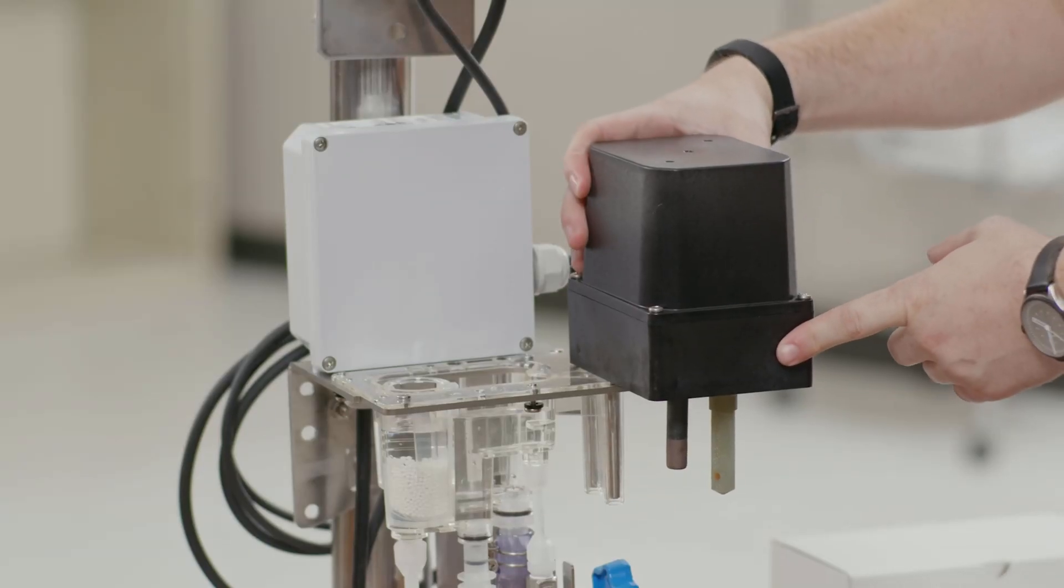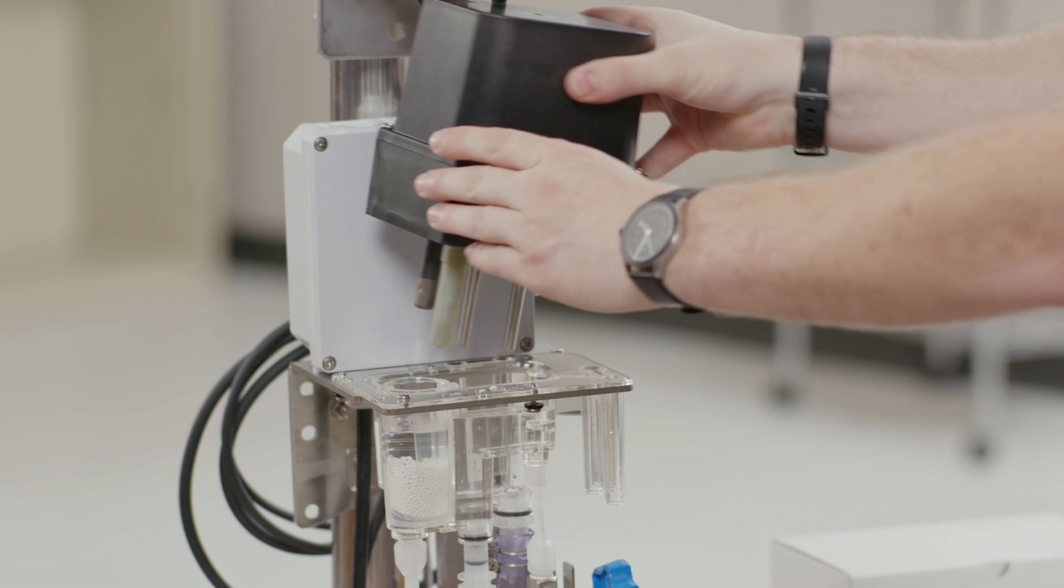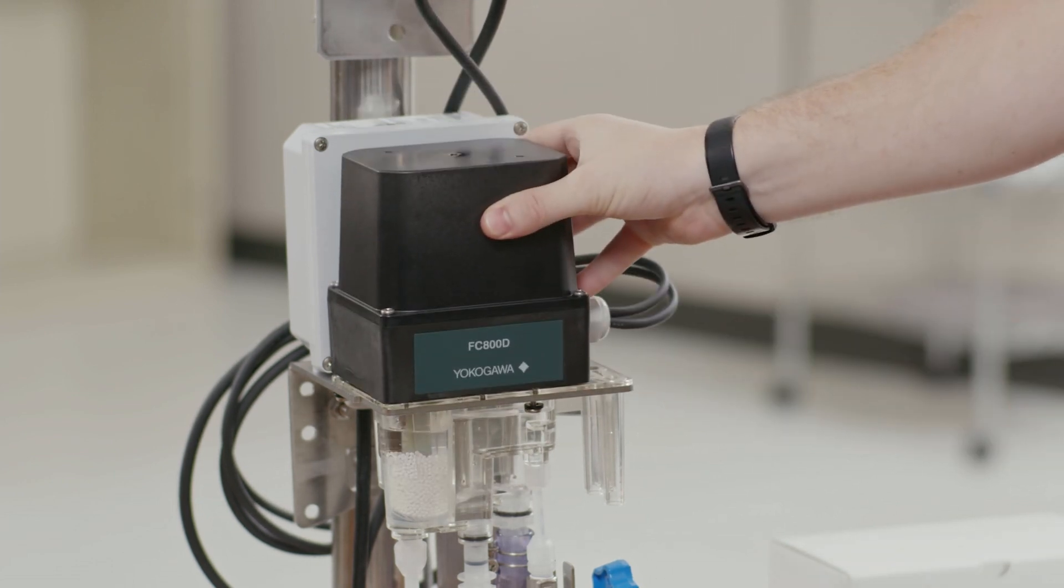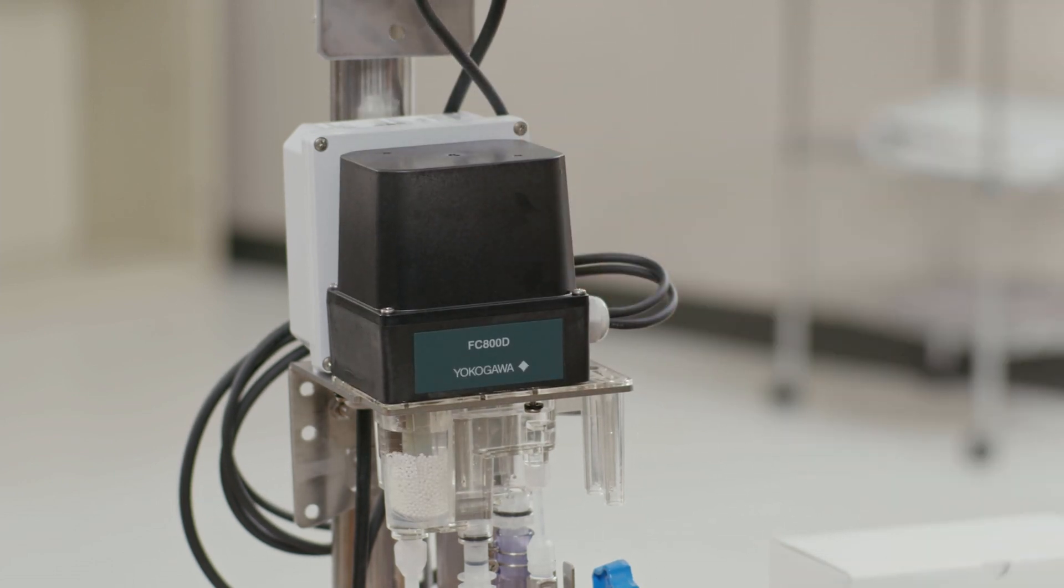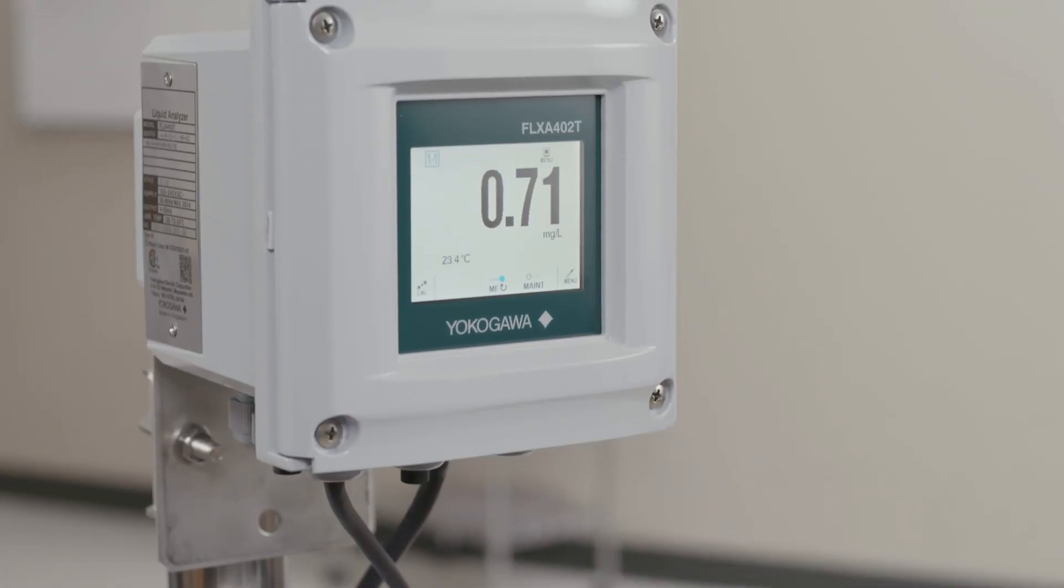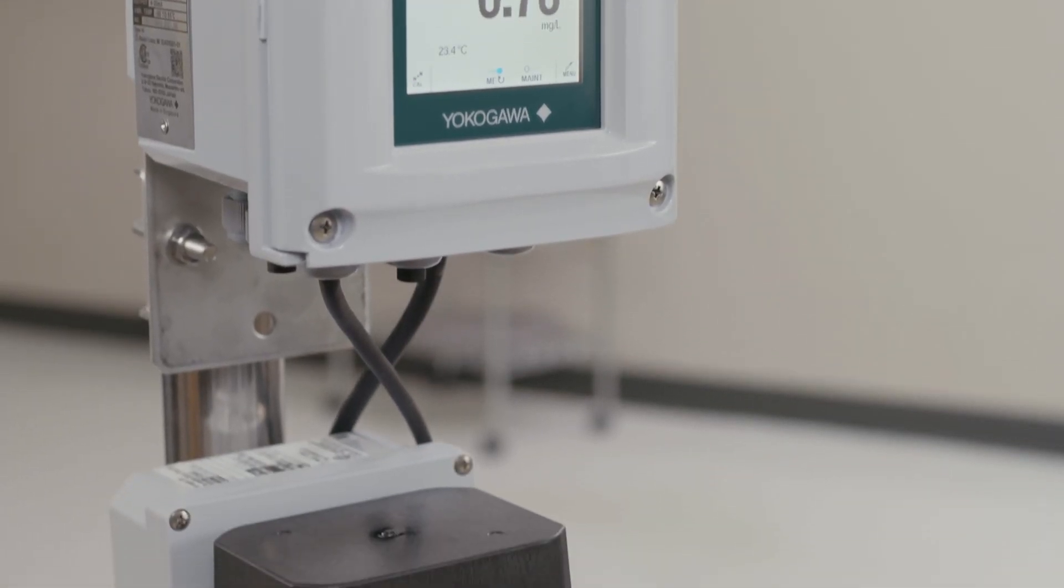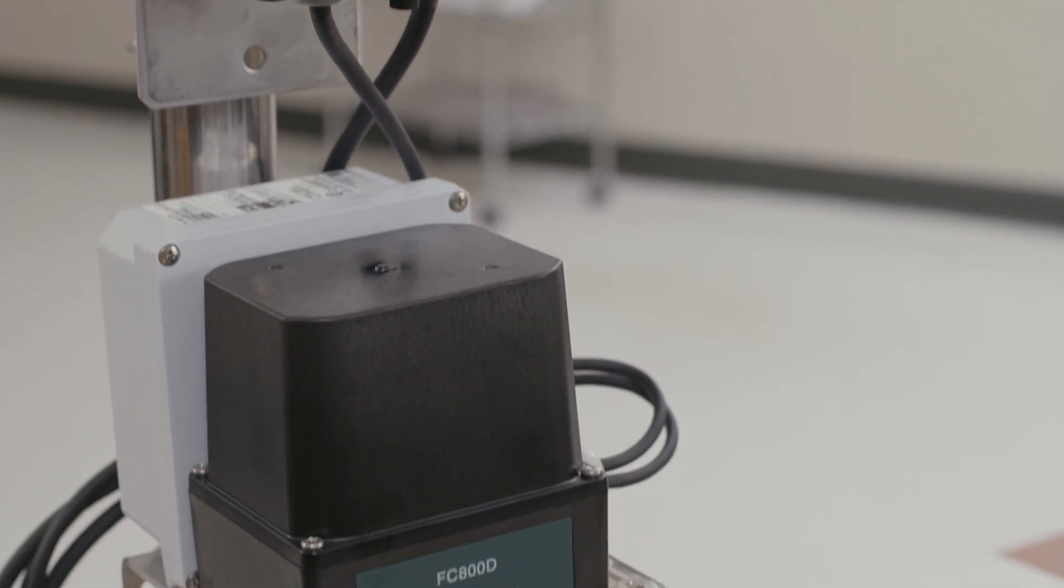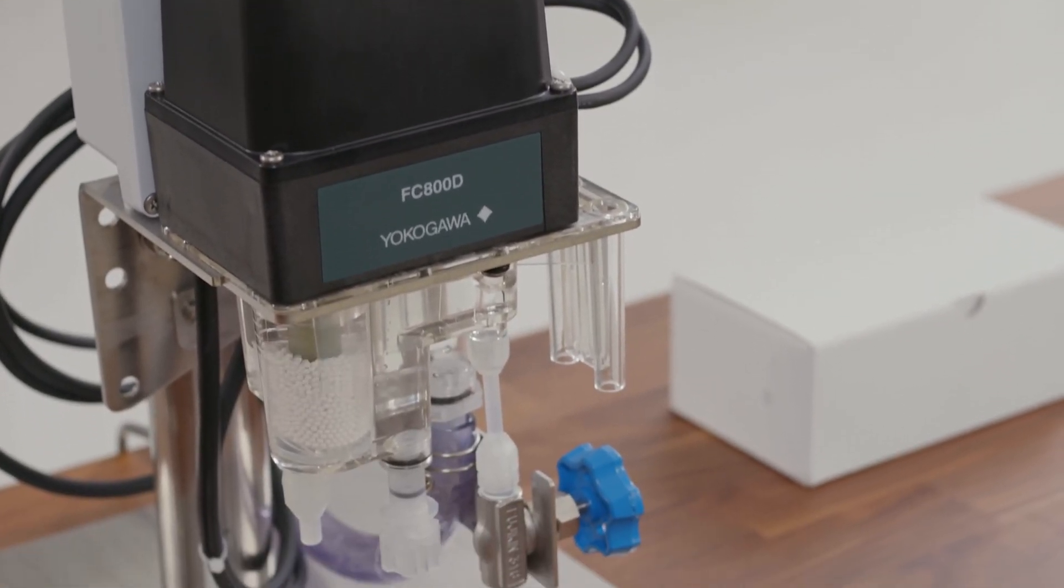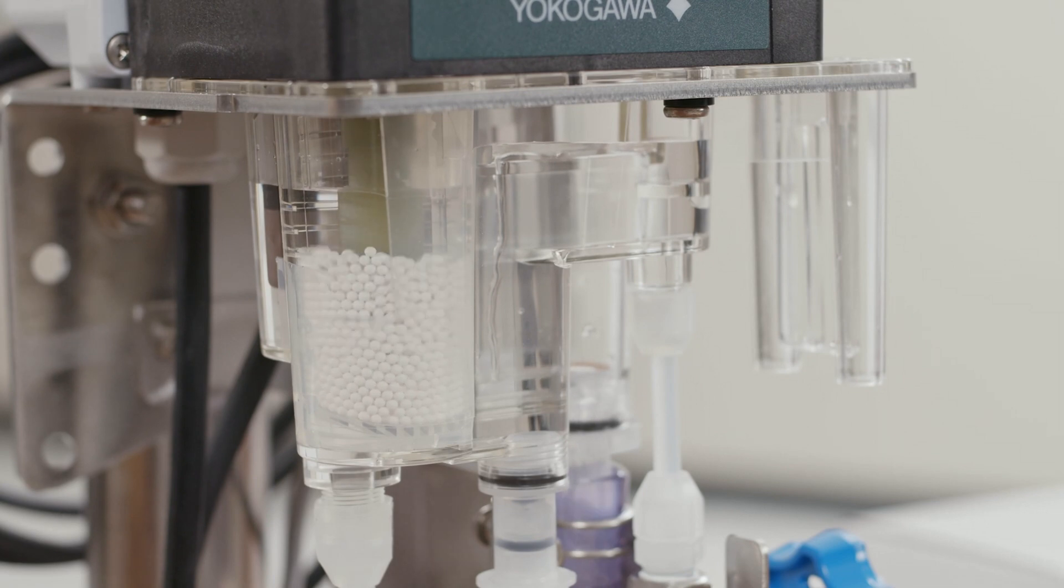Now is a good time to move the measurement assembly from the maintenance position to the measurement position. This will allow you to get your process measurement you need for your span calibration. Now that we've done a zero calibration, we'll move on to the span calibration. The FC-800D uses a process calibration for its span calibration. This uses what your process value is to calibrate your span.